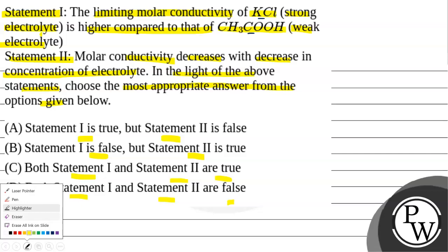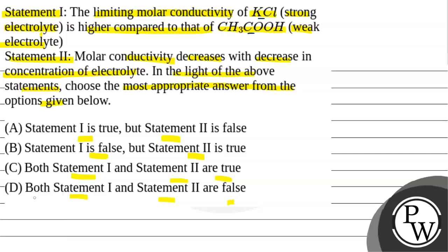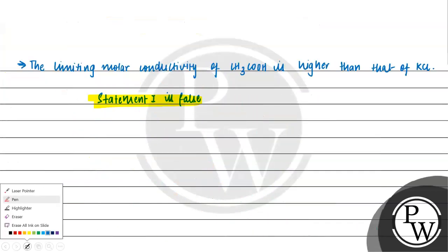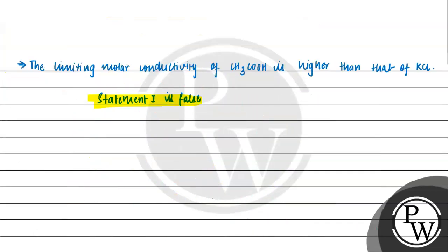Now let us move on to Statement 2, which says molar conductivity decreases with decrease in concentration of electrolyte. We know what molar conductivity is. When we decrease the concentration of the electrolyte, the value of molar conductivity does not decrease. So the statement is obviously false.